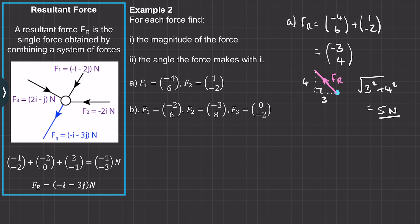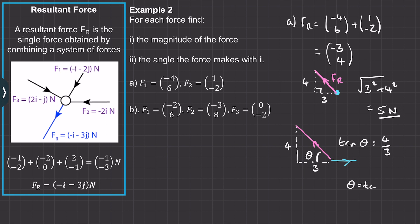To find the angle that this force makes with the i direction, we label the angle theta. It's a right-angle triangle with height 4 and base 3, so we use trigonometry: tan(θ) = opposite over adjacent = 4/3. Therefore theta = arctan(4/3), which is approximately 53 degrees. Now try working out the magnitude and angle of the resultant force in question b — pause the video and we'll go through the worked solution.